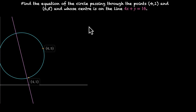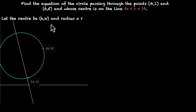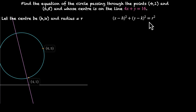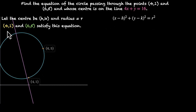We can start with a circle with some variables. Let's assume that the center is h comma k and the radius is r. Using this, we can form the equation: x minus h squared plus y minus k squared equals r squared. Here h and k are the coordinates of the center and r is the radius. This equation is satisfied by the two points 4 comma 1 and 6 comma 5, because they lie on the circle. So we can plug these values in.